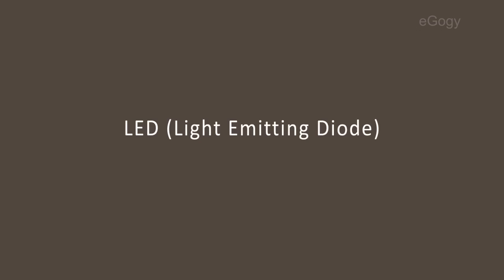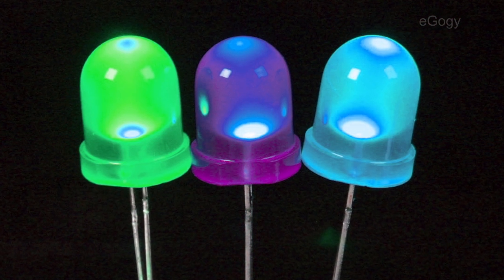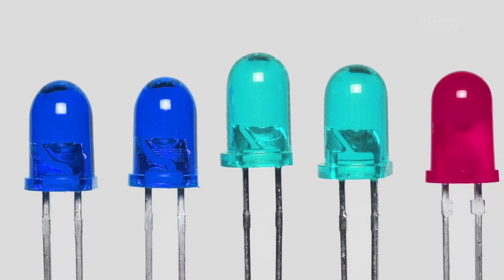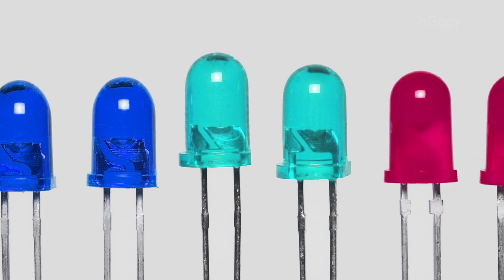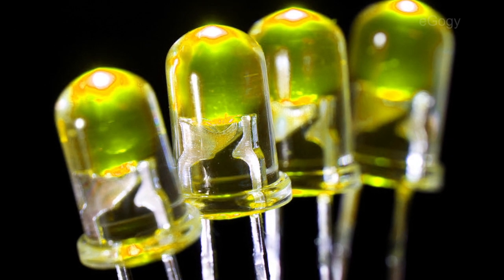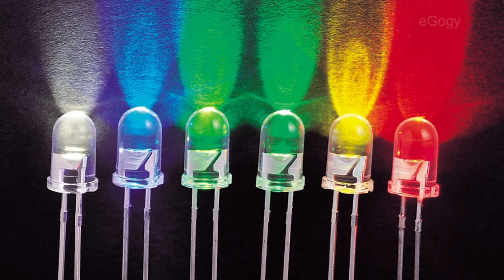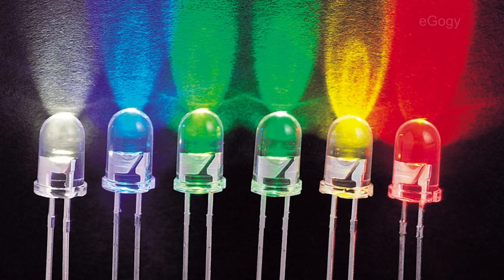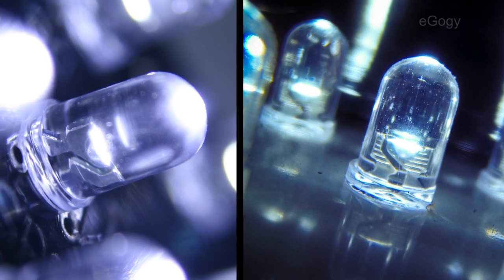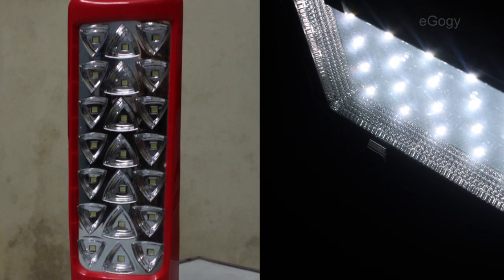LED lamp. LED is an electronic device which converts electrical energy into light energy using very little power. Today, LEDs in different colors are available in the market. By way of manufacturing, LED lamps give different colors. LEDs that provide white light are called white LEDs. White LEDs are used as street lights, headlamps of vehicles, and other household applications.